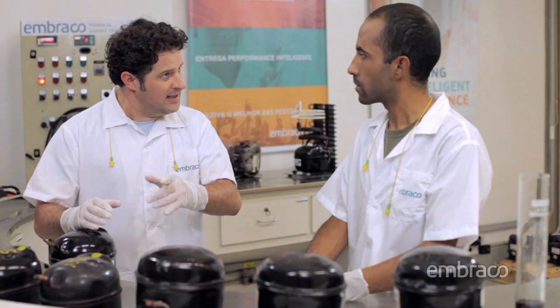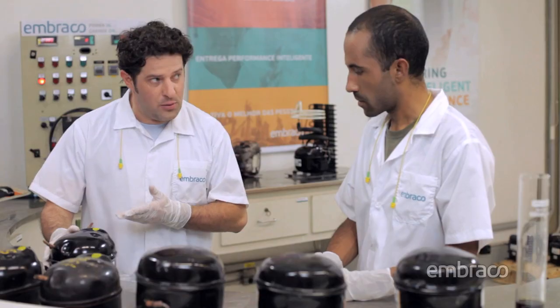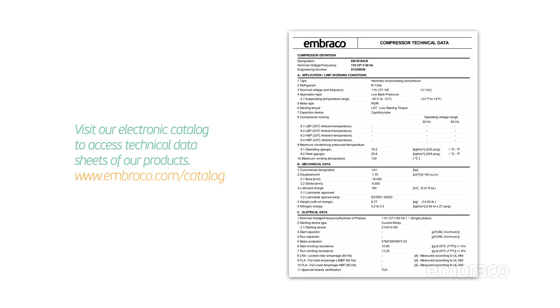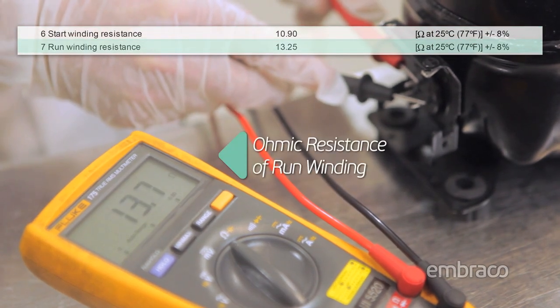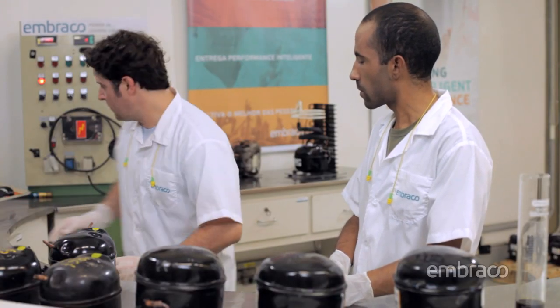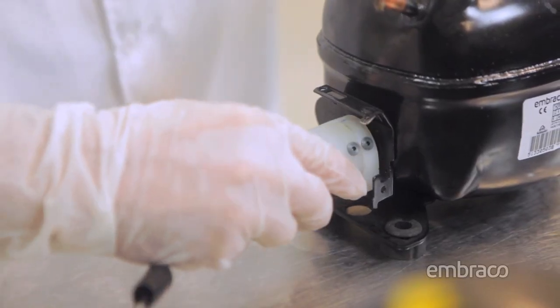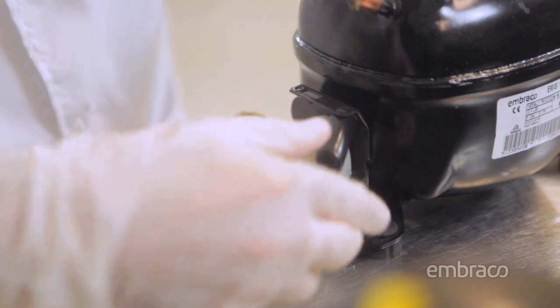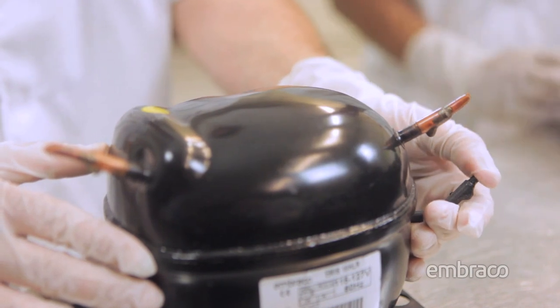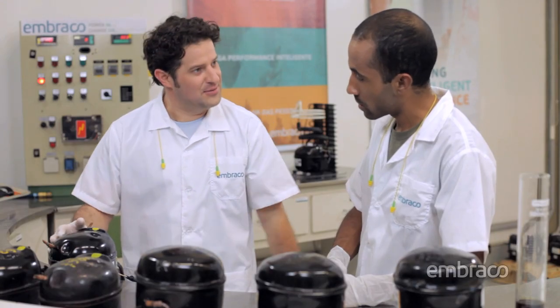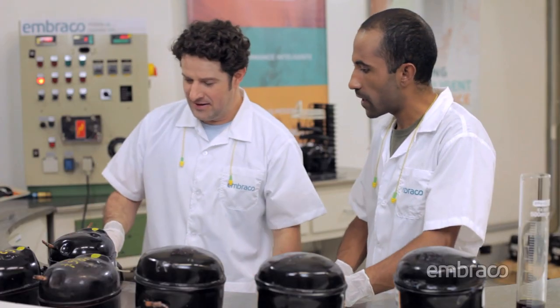And also, before removing the compressor, we must check the electrical components. Remember the video about changing compressors? So, how do we check if the compressor isn't defective? First, we check the ohmic resistance of the windings and compare it with the information on the datasheet. Now, let's turn on the compressor and check for noise and compression. Confirmed, the compressor isn't defective. It's really important to check these items before removing the compressor.